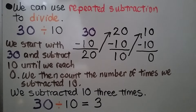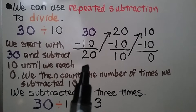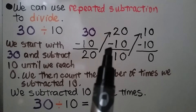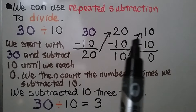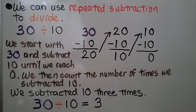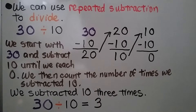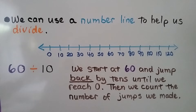We can use repeated subtraction to divide. We have 30 divided by 10, and we start with 30 and subtract 10 until we reach 0. 30 minus 10 is 20, minus 10 is 10, minus 10 is 0. We count the number of times we subtracted 10 — we did it three times — so 30 divided by 10 is equal to 3.